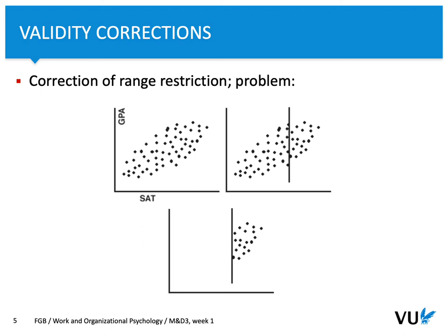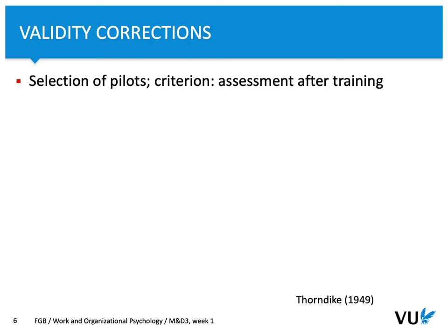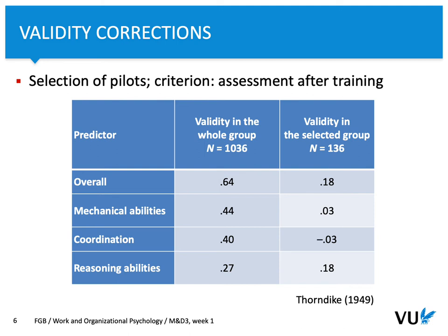Let's consider the selection of pilots. Our criterion is assessment after training. We use a predictor to see what the work performance is in the whole group, and we found that the overall relationship between our predictor and assessment after training in a large sample of more than a thousand participants was 0.64. Taking into account how we evaluate effect sizes, we would conclude that 0.64 is a large effect size.